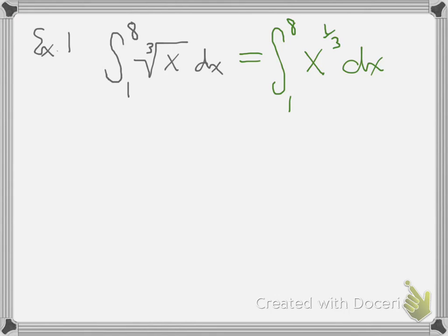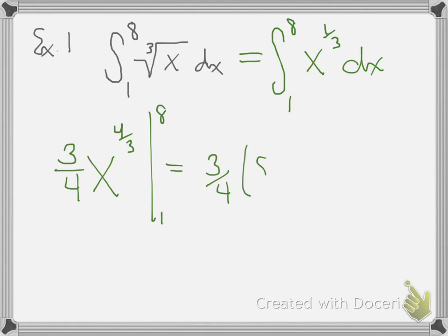Now we need to reverse the power rule to find an antiderivative of x to the one-third power. We're going to add 1 to the one-third, and 1 plus one-third is four-thirds, so we get x to the power of four-thirds. Then we divide by that new exponent, but dividing by four-thirds is the same as multiplying by three-fourths. So I'll put three-fourths in front as a multiplier, and put my limits of integration on the evaluation bar.